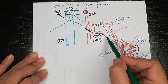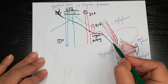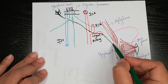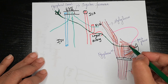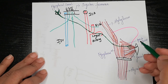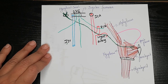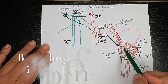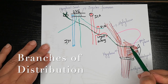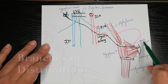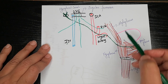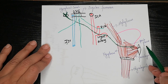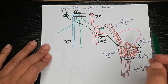The nerve enters the substance of the tongue through the posterior border of the hyoglossus and reaches the genioglossus, where it gives its terminal branches. The terminal branches of the hypoglossal nerve proper supply all the intrinsic and extrinsic muscles of the tongue except the palatoglossus.